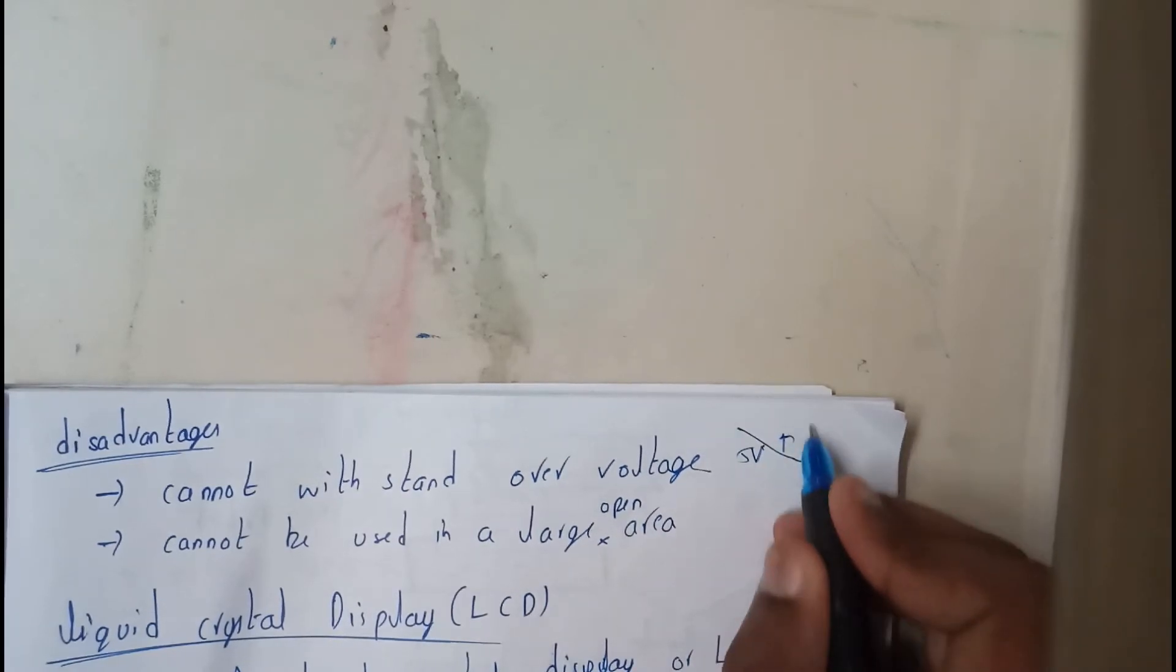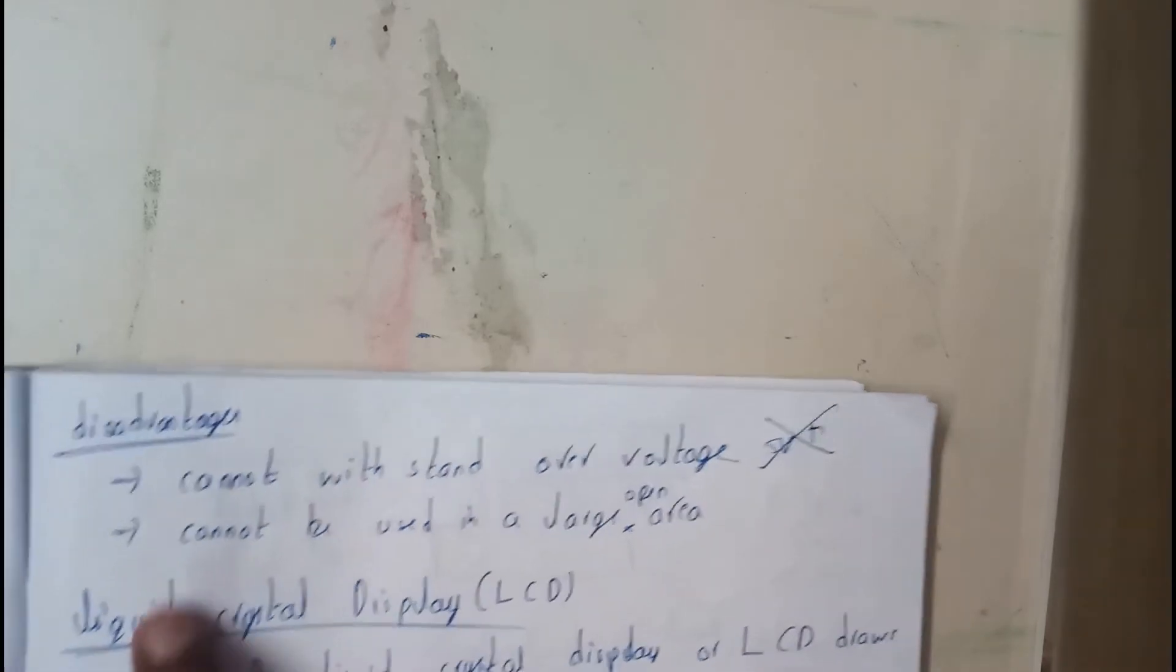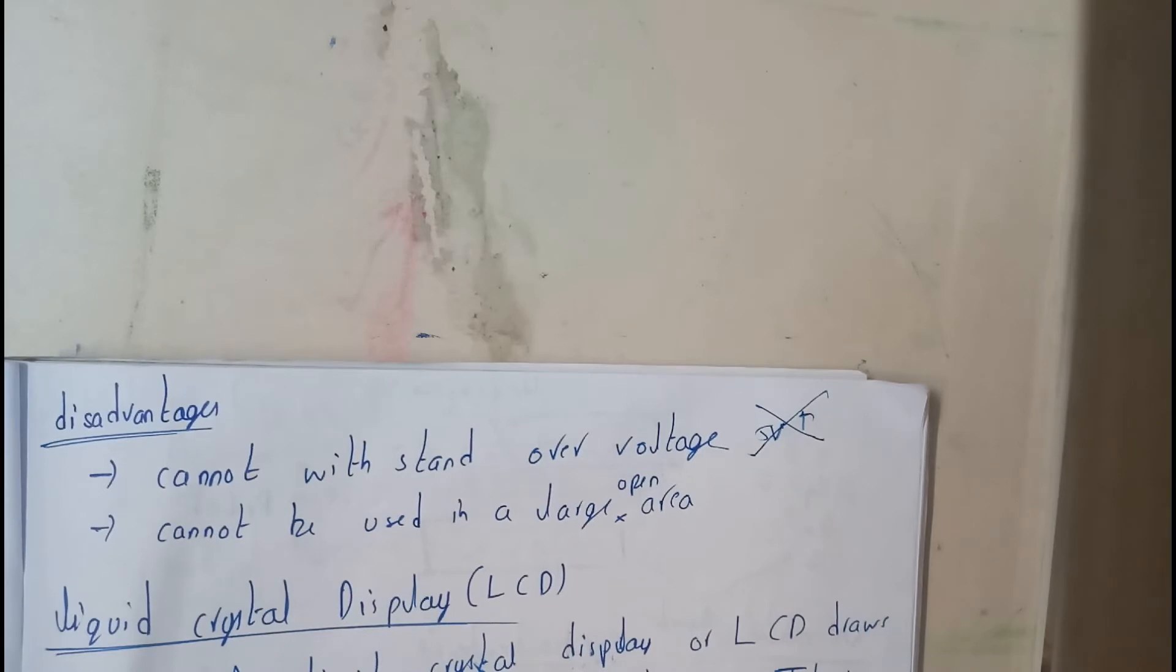We also have some basic disadvantages. I have told you that it should not exceed 5 volts. If it exceeds it's going to get damaged - so cannot withstand above 5 volts and cannot be used in open areas as the light intensity will be a bit less.